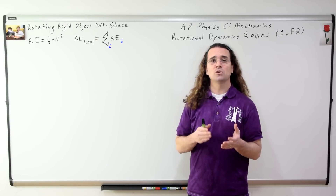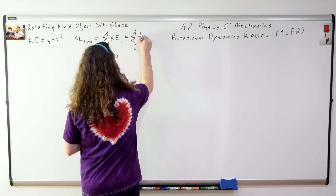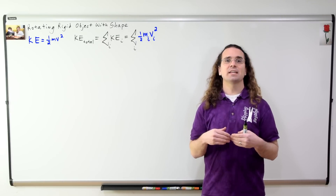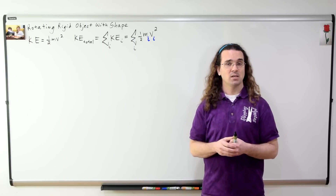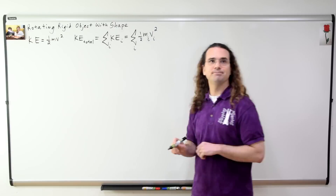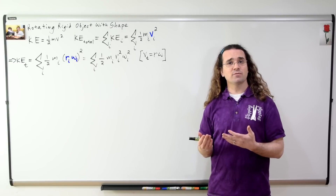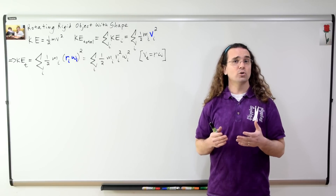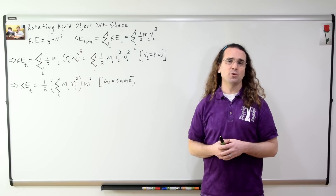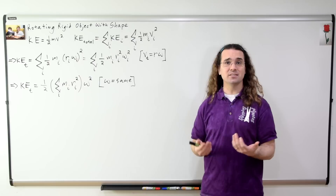The index i represents the total number of pieces of the object, going from 1 to the total number of particles. The equation for kinetic energy is one-half mass times velocity squared, and we are adding the kinetic energies for every particle. Because the object is rotating, the velocity of every particle is a tangential velocity. We substitute for the tangential velocity the radius for each particle times the angular velocity, both squared. We can factor out the one-half, and since every particle in a rigid object has the same angular velocity, we don't need an index on omega.